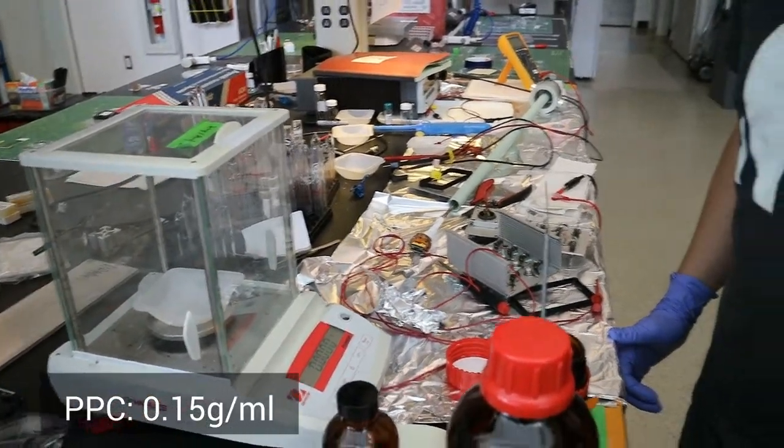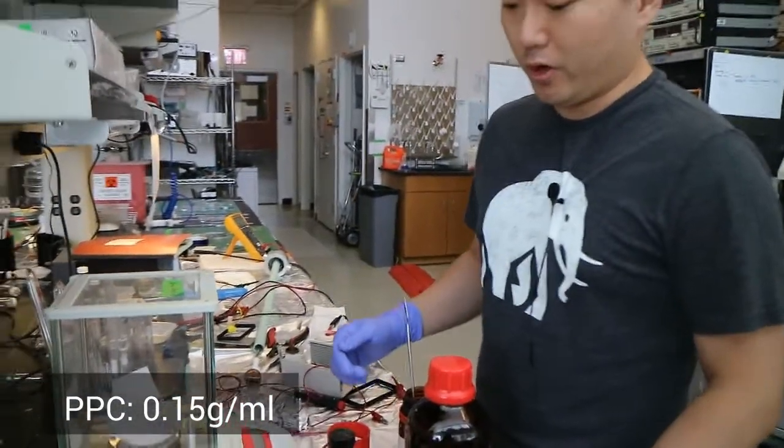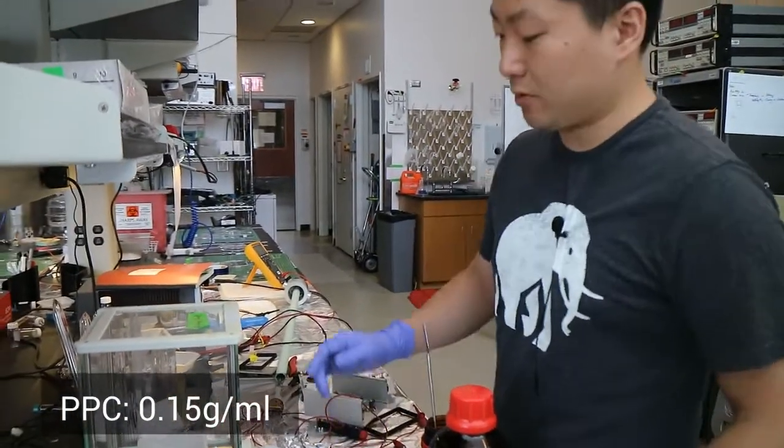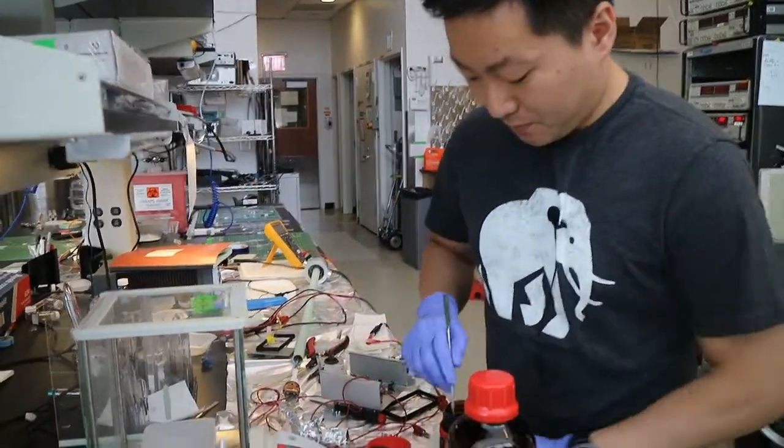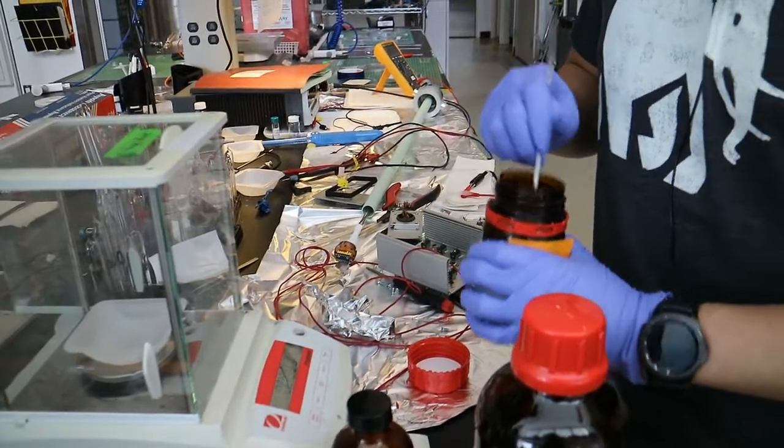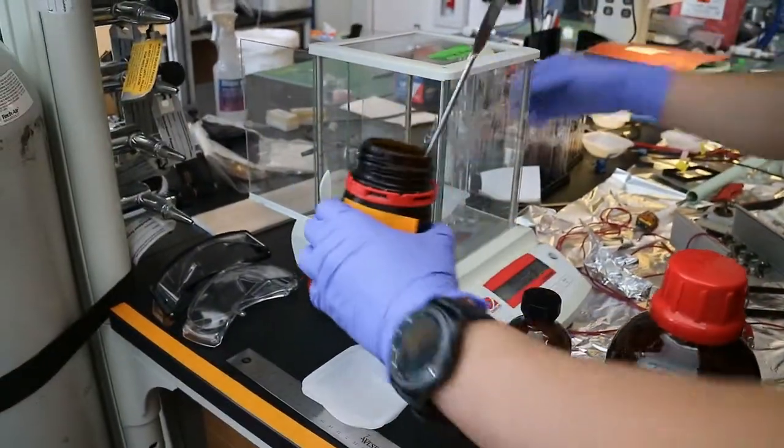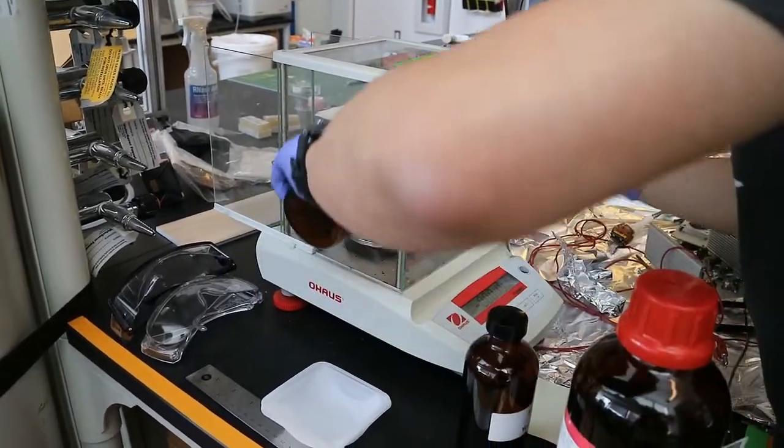We take 0.15 gram per milliliter. So you can calculate whatever amount of the PPC solution. So we just put the PPC in here.